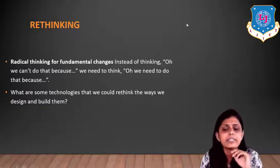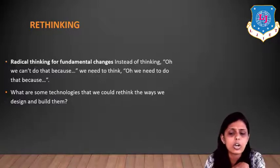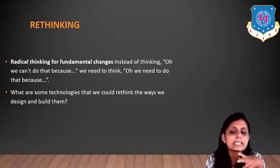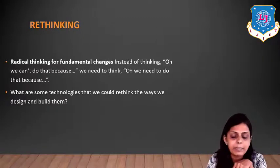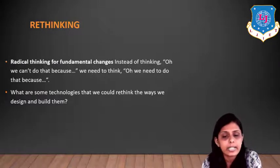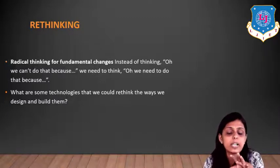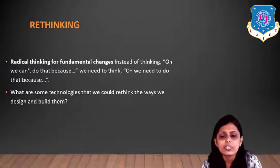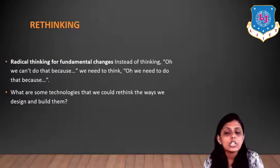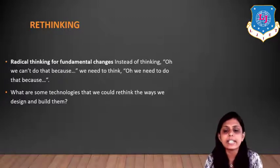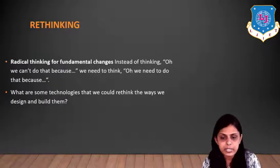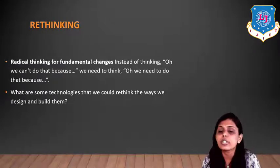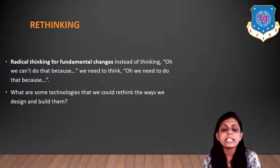Rethinking involves radical thinking for fundamental changes — your idea should be very clear. One should think about how existing technologies can be redesigned to be more sustainable and efficient so that the environment is conserved. For example, by rethinking how to generate power, scientists have utilized wind energy and wind turbines to generate electricity rather than coal — rethinking that electricity generation can be done through different methods like wind or water.